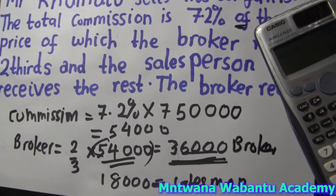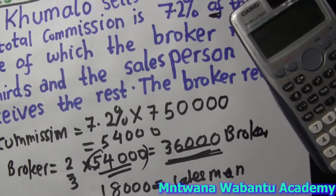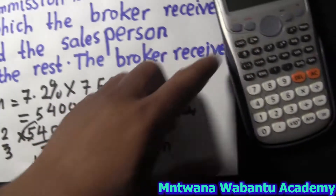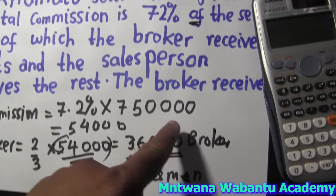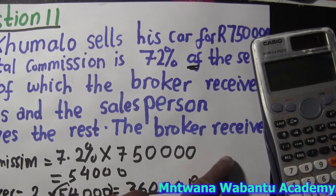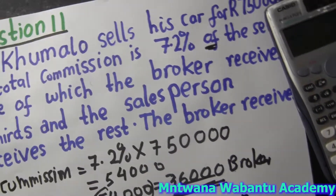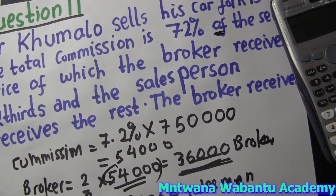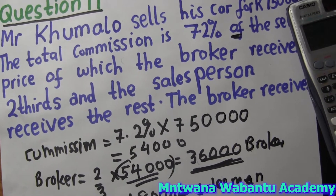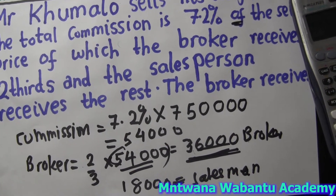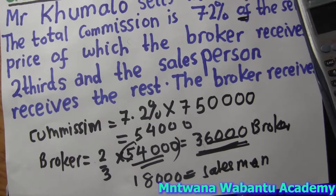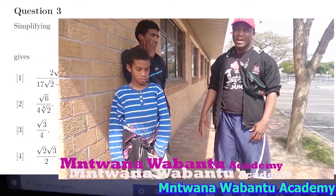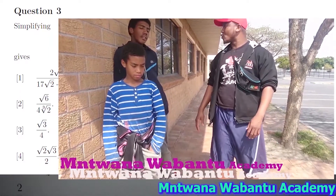Now let's go to the question. The question asks how much the broker is going to receive. The broker is going to receive R36,000 — that's option number two. It's easy like that.